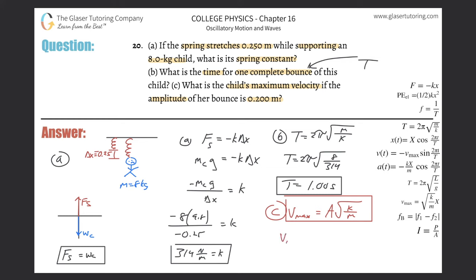Plugging everything in: v_max = 0.2 times the square root of 314 divided by 8. This gives approximately 1.25 meters per second. That's the maximum velocity the child can obtain on this spring. Thanks for tuning in — please subscribe, take care.